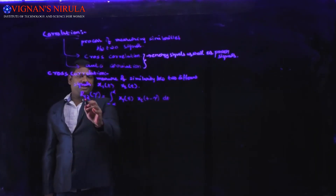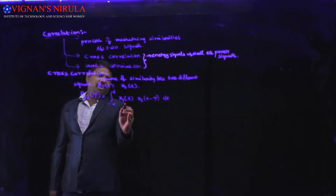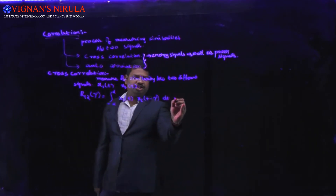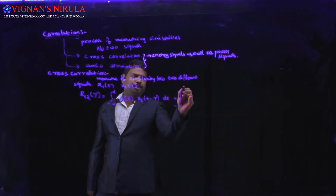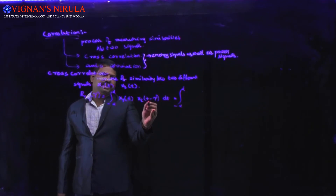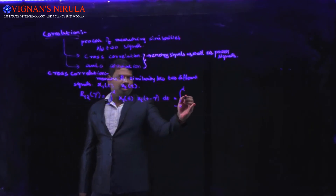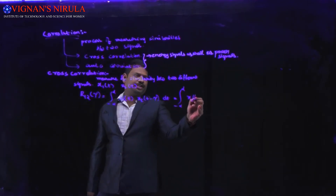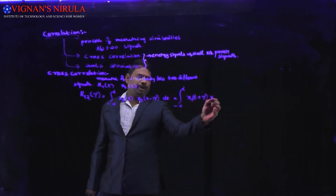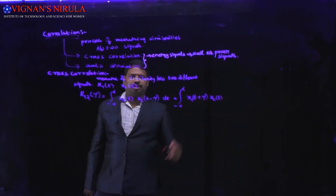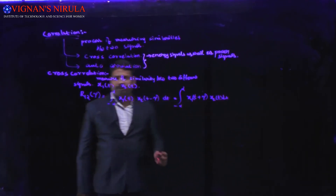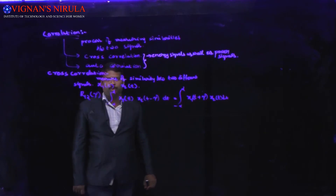When we call it R12, first we should have the first signal, next the second signal, integrated from minus infinity to infinity. It can also be given as: since we have shifted the second signal by t minus τ, we can have a choice of shifting the first signal to t plus τ, making the common region with x2(t), dt. This is also called R12(τ).